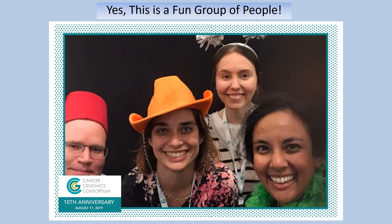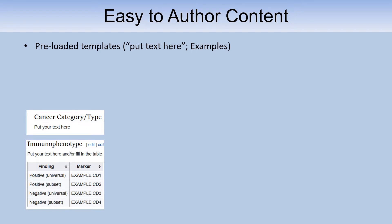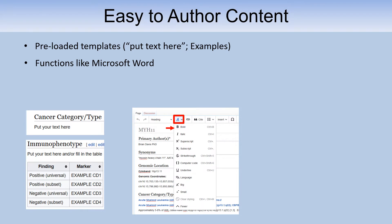This is a really fun group of people — I just had to show this picture from the CGC meeting last year. So as I mentioned, it's organized based on the WHO. What I'm going to show you today is content from AML, which is the first completed work. The other disease sections are in various states of completion. We make pages based on all the WHO diseases as well as additional entities important to the field. We spend a lot of time making this really easy to author content, with preloaded templates — areas that say 'put your text here,' and tables with examples. This whole thing functions like Microsoft Word.